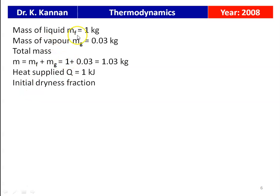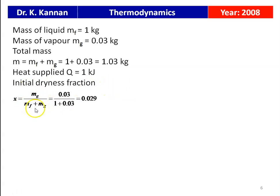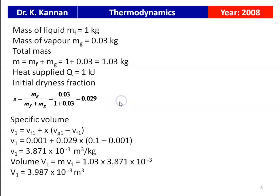We are given: mass of liquid Mf = 1 kg, mass of vapor Mg = 0.03 kg, total mass = 1.03 kg, heat supplied Q = 1 kJ. Initial dryness fraction x = Mg / (Mf + Mg) = 0.03 / 1.03 = 0.029. Initial specific volume V1 = Vf1 + x(Vg1 − Vf1) = 0.001 + 0.029 × (0.01 − 0.001) = 3.871 × 10⁻³ m³/kg. Initial volume V1 = 1.03 × 3.871 × 10⁻³ = 3.987 × 10⁻³ m³.